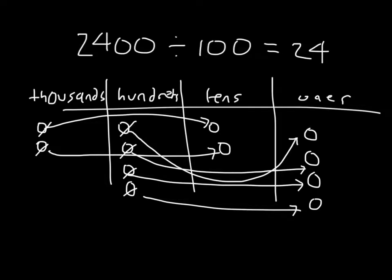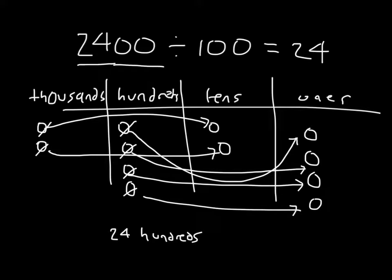We also could have looked at this another way — how many hundreds are there in 2,400? If we rewrote that, it would be 24 hundreds. And if we divided 24 hundreds by 100, of course we would get 24.